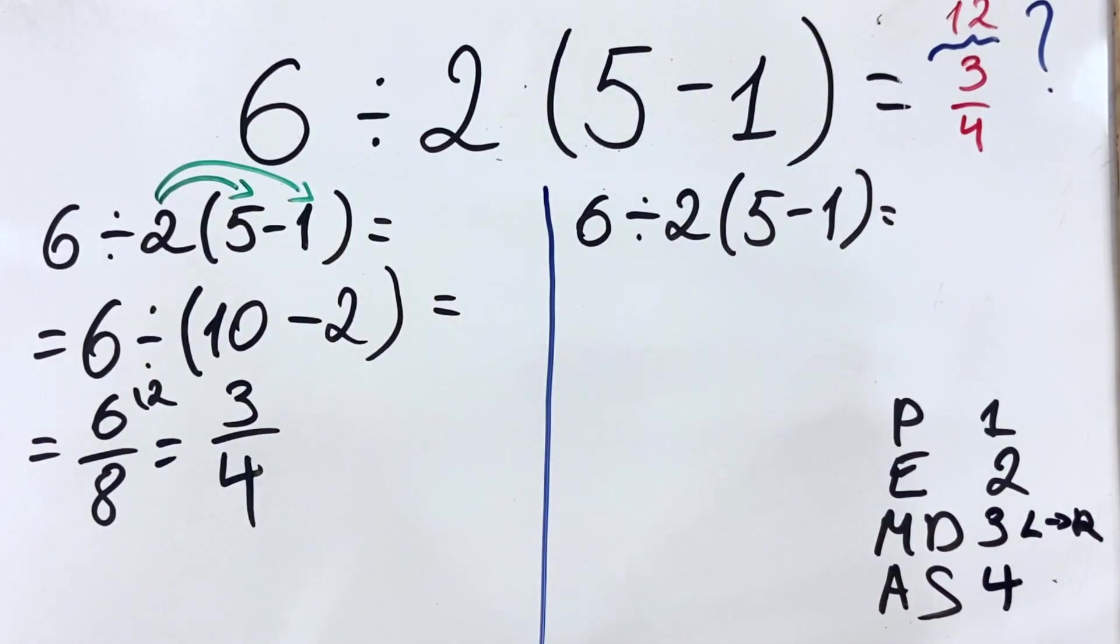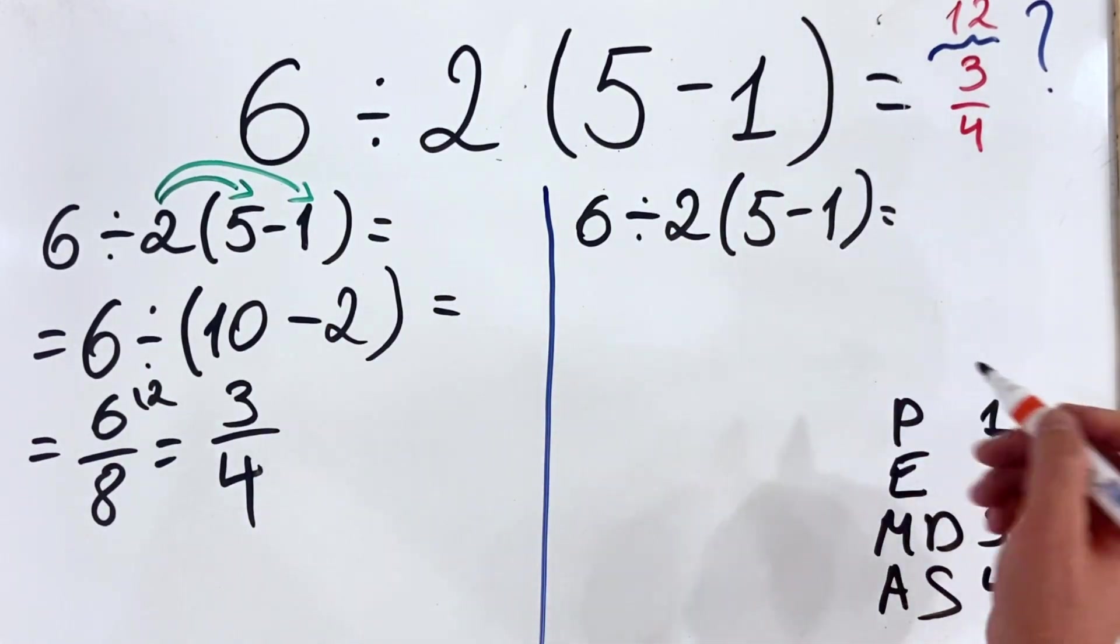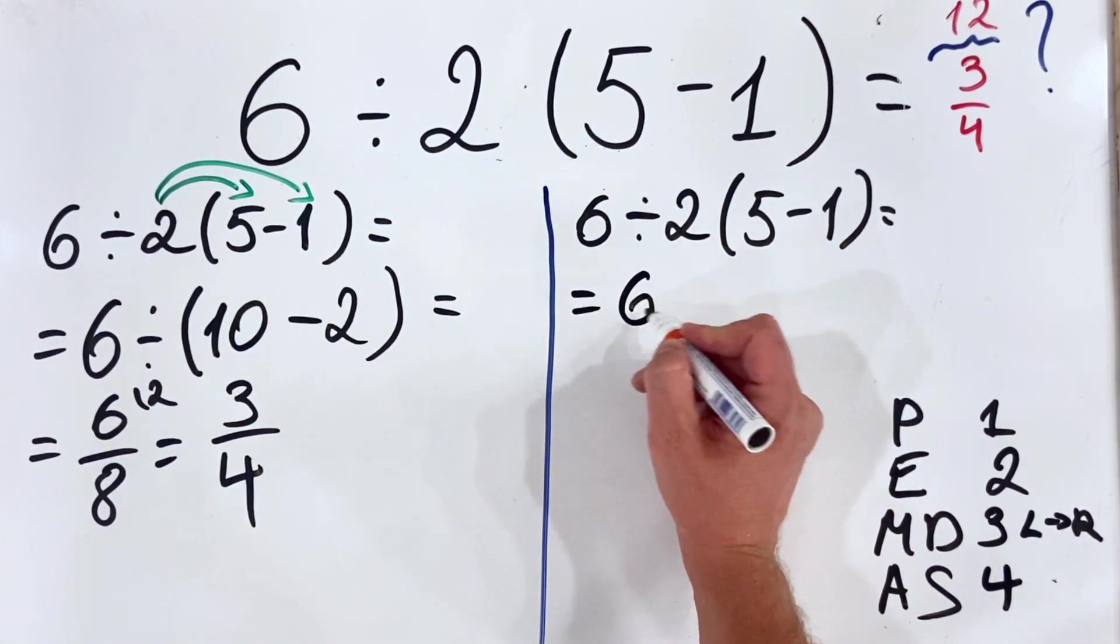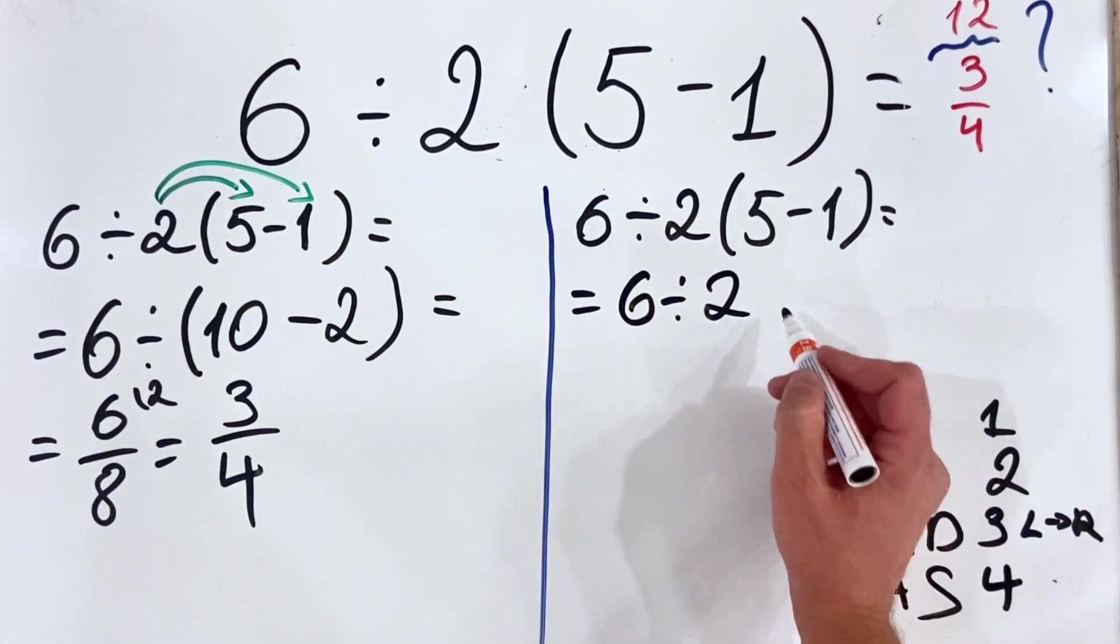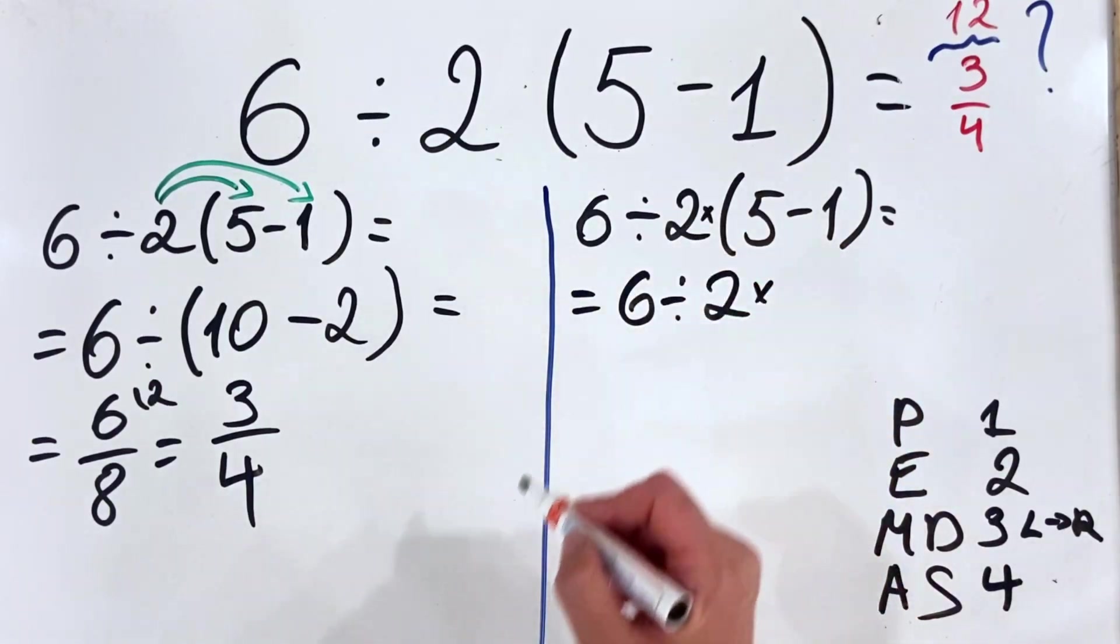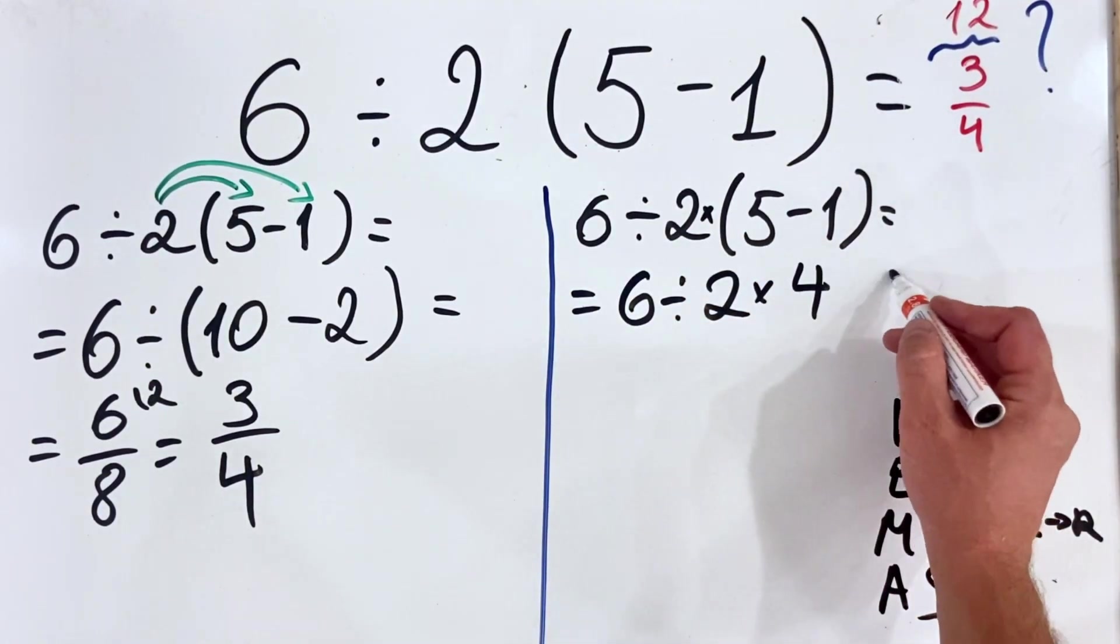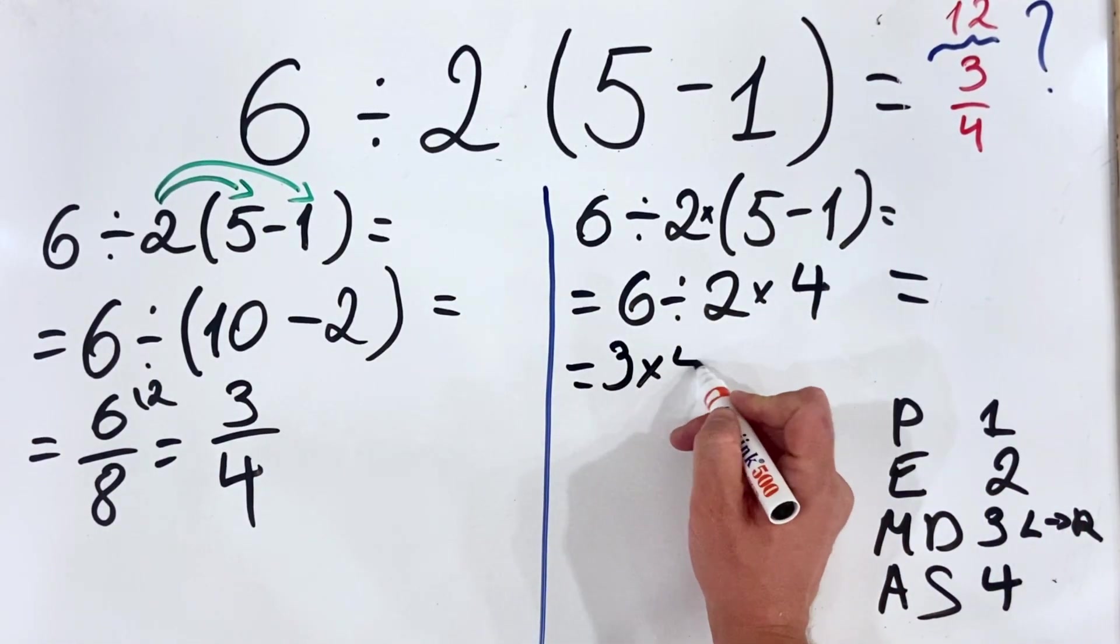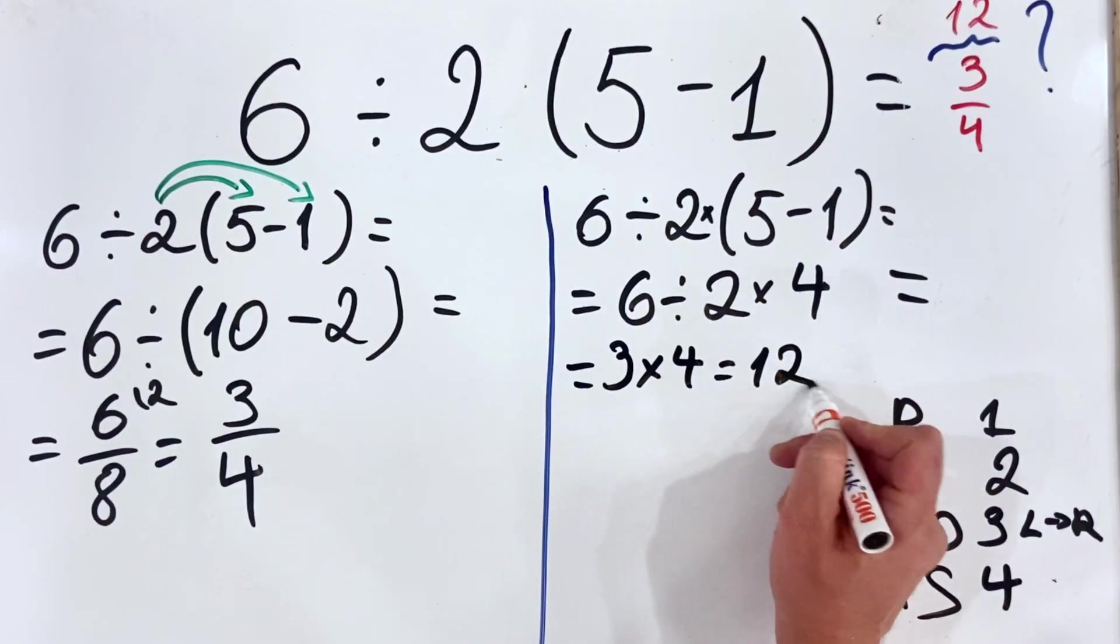In our situation, we have 6 divided by 2(5 minus 1), so we tackle first the parentheses. So we get 6 divided by 2 multiply, because here is the multiplication, by 4. And what we get is 6 divided by 2 is 3 multiplied by 4, and equals 12.